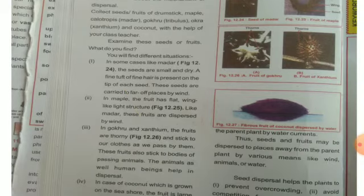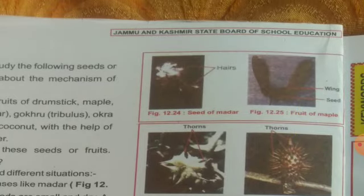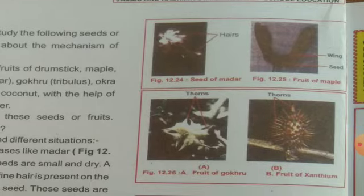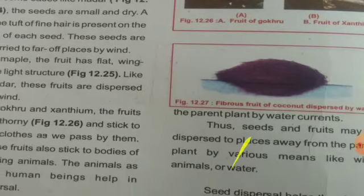Collect all of these and examine these seeds and fruits — what do you find? This is an activity. You will find different situations. In some cases, like madar — as shown in activity 12.4 — here are the seeds of madar, these are maple seeds, these are gokhru seeds, these are xanthium seeds, and these are coconut seeds which disperse by water.